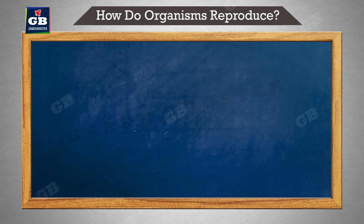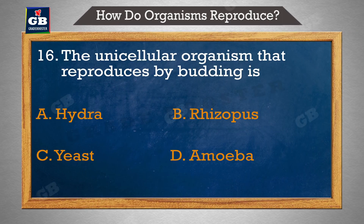The unicellular organism that reproduces by budding is. A. Hydra, B. Phrygopas, C. Yeast, D. Amoeba.